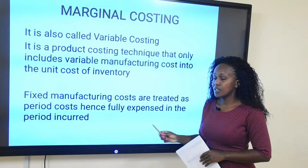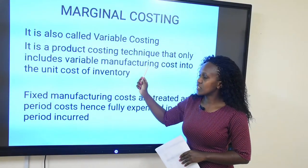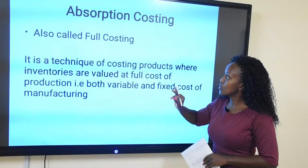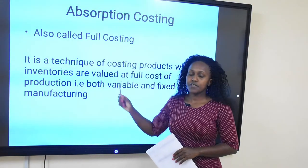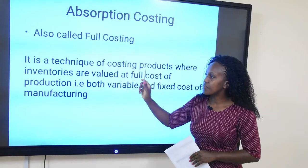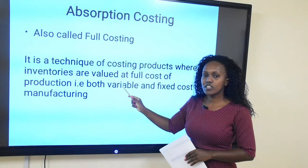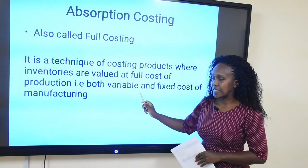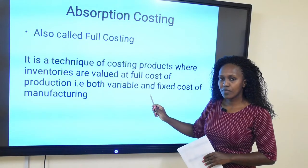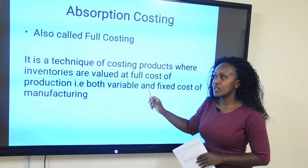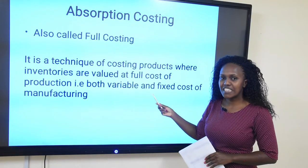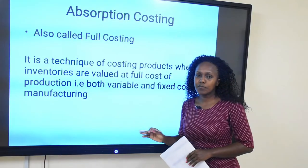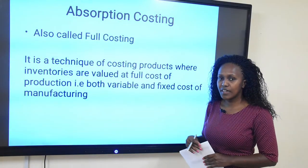Marginal costing or variable costing only considers the variable manufacturing costs in the unit cost of inventory. This is what differentiates it from absorption costing. Absorption costing is also called full costing. It considers both the variable and the fixed manufacturing costs in the value of inventory — so fixed manufacturing costs are also treated as product costs. The key difference between the two methods is simply on how they treat fixed manufacturing overheads.